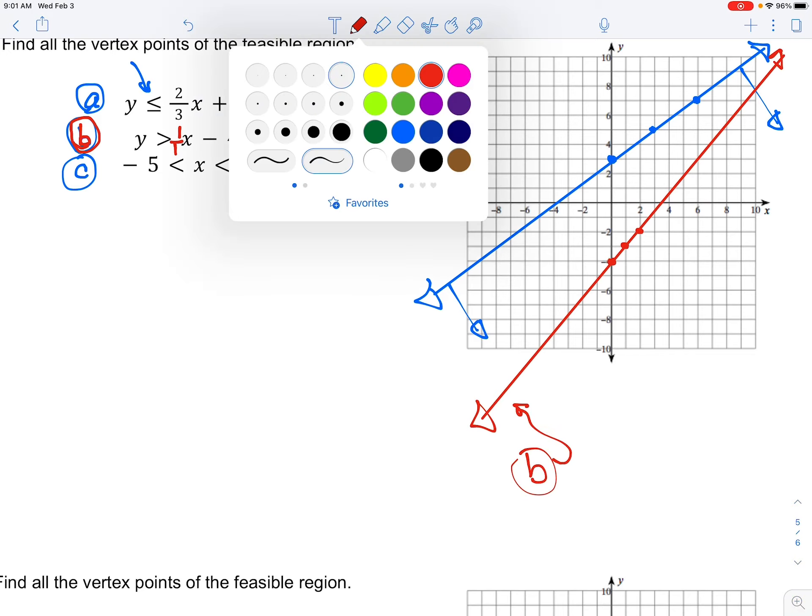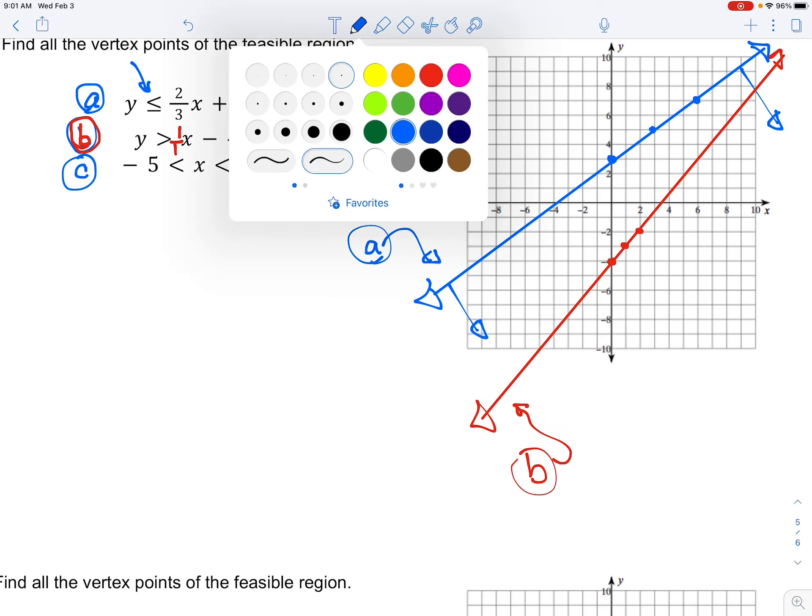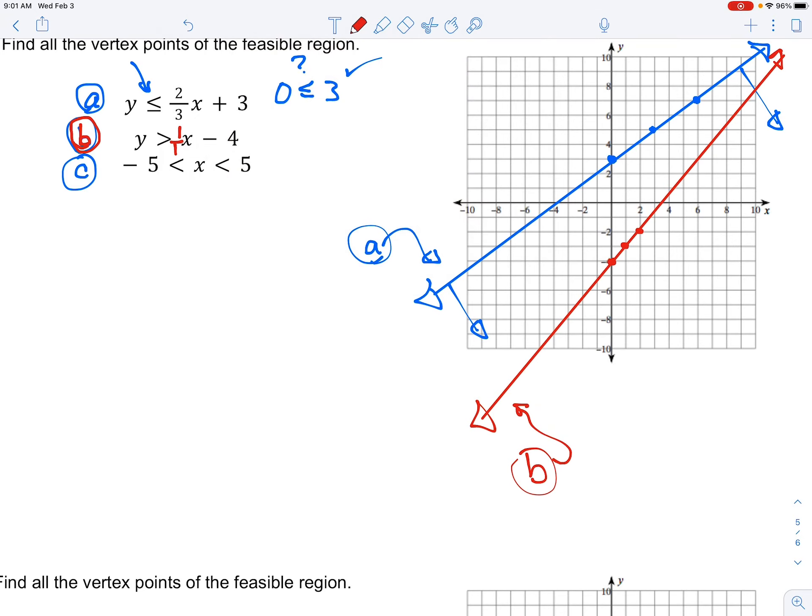That's line B. I forgot to label line A. I'm going to go back and label inequality A and inequality B. Okay, so to test now to see what side to shade for Y is greater than X minus 4, I'm going to use the test point 0, 0 again. And I'm going to double check, is 0 greater than 0 minus 4 or negative 4? It is. So that means I'm shading on the side where 0, 0 is.